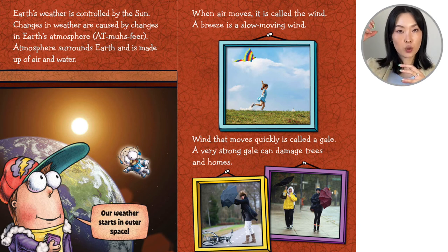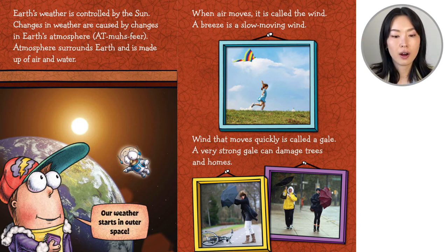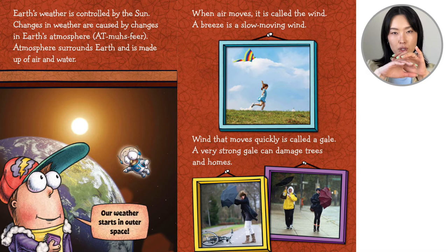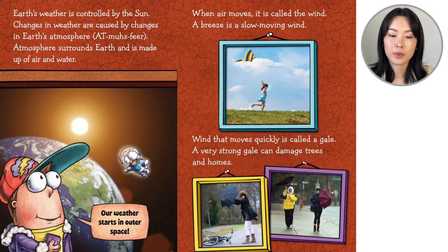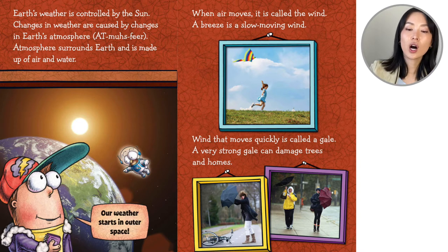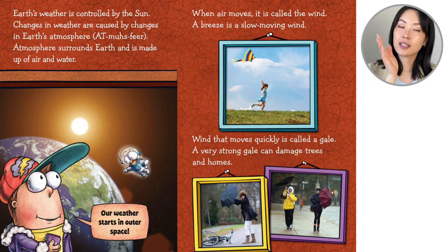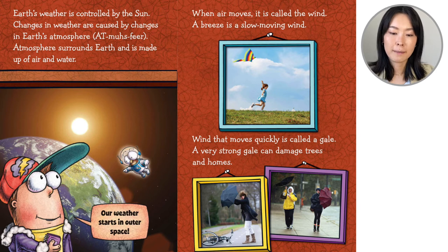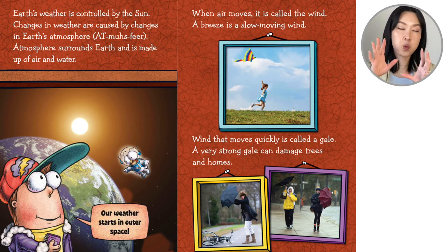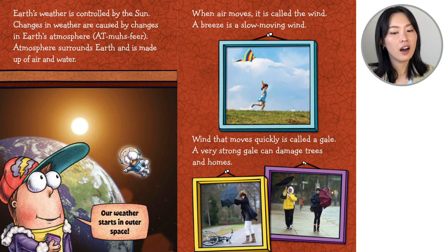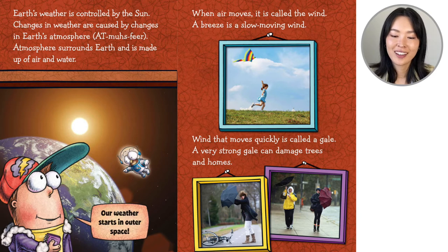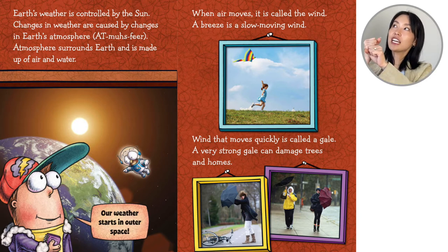Well, Earth's weather is controlled by the sun. Changes in weather are caused by changes in Earth's atmosphere. The atmosphere surrounds Earth and is made up of air and water. When air moves, it's called wind. A breeze is a slow-moving wind. Wind that moves quickly is called a gale. A very strong gale can damage trees and homes. Maybe you've experienced your umbrella turning inside out.